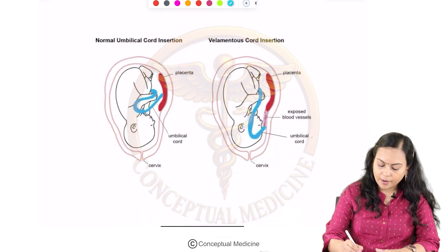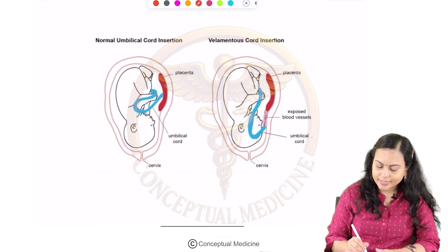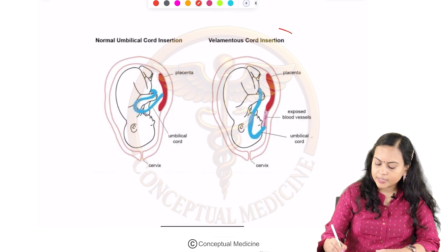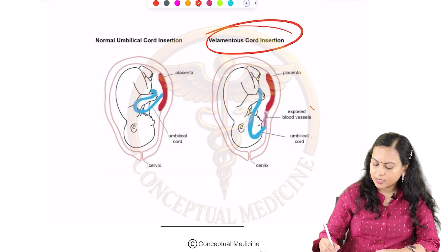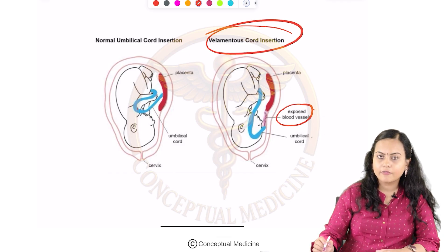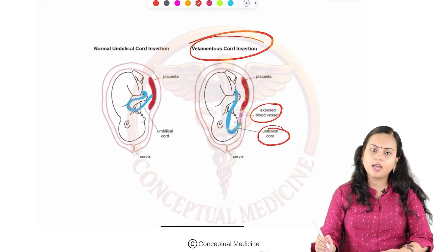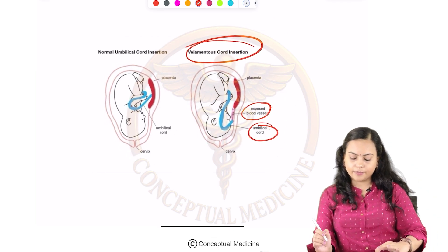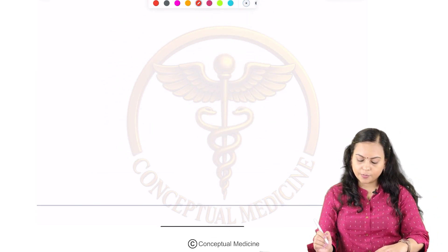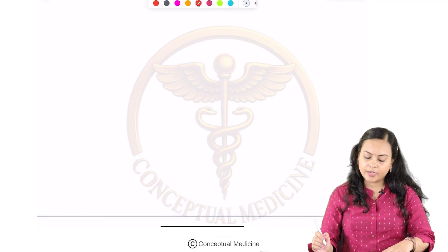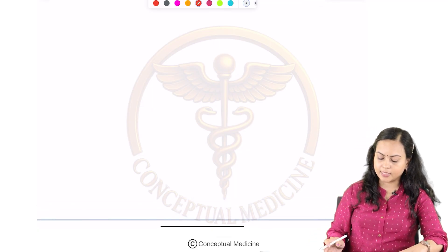This is velamentous cord insertion. Normal umbilical cord insertion has all the vessels contained inside the umbilical cord itself. In velamentous cord insertion, there are exposed fetal vessels seen outside the umbilical cord. Hope you have understood about the variants of placenta.